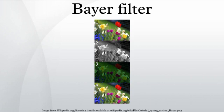A Bayer Filter Mosaic is a color filter array for arranging RGB color filters on a square grid of photo sensors. Its particular arrangement of color filters is used in most single-chip digital image sensors used in digital cameras, camcorders, and scanners to create a color image.